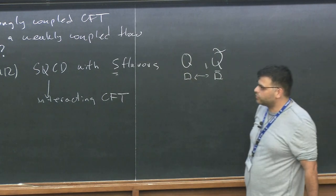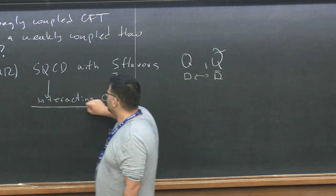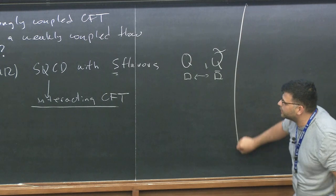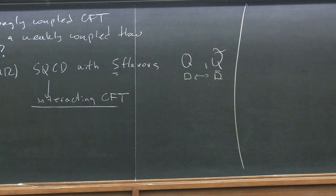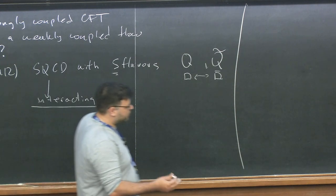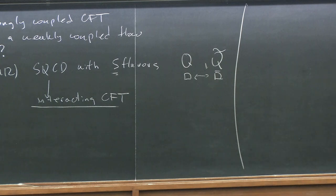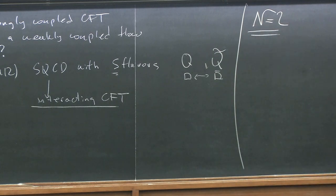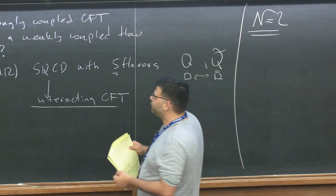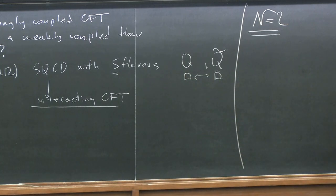This is an example of a flow where you start from a free theory and flow to an interacting CFT. However, in recent years we have learned that not all theories are as simple as that. There are examples of strongly interacting theories for which we don't know of a weakly coupled starting point in the UV that flows to those theories, and many of these canonical examples have N=2 supersymmetry.